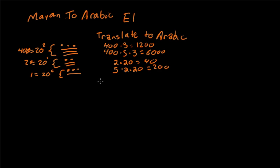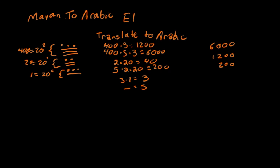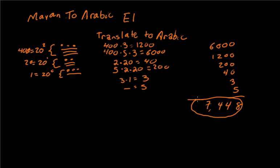And for our last column here, each dot is worth 3, so that gives us 3. To translate this to Arabic, we just add up our values: 6,000 plus 1,200 plus 200 plus 40 plus 3 plus 5 gives us a value of 7,448, and 7,488 is our final answer.